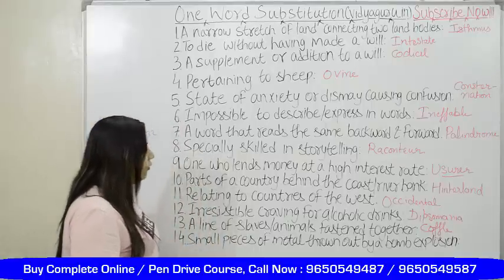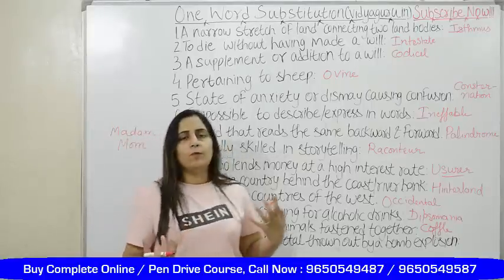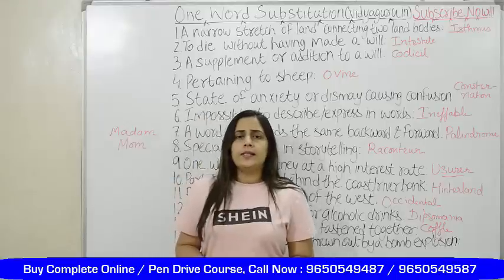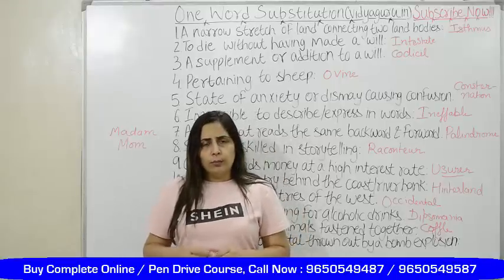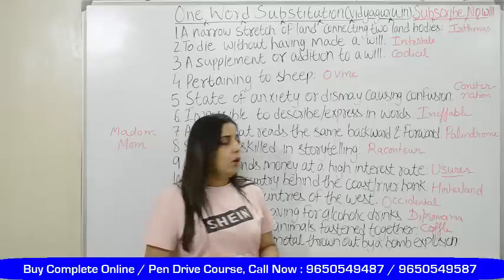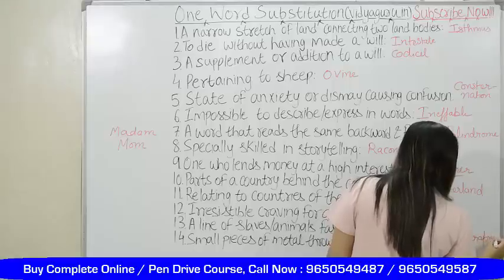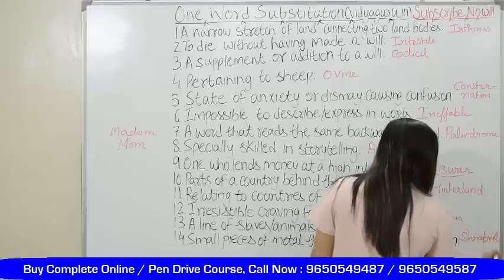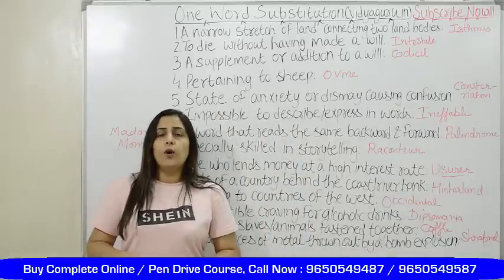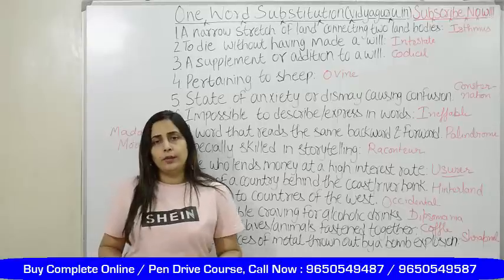Small pieces of metal thrown out by a bomb explosion. When a bomb explodes, you find fragments of it — the parts, the shells, or the remaining pieces of the bomb — all those things are called shrapnel. Shrapnel is the word which talks about the remains of the bomb, the fragments after the explosion.